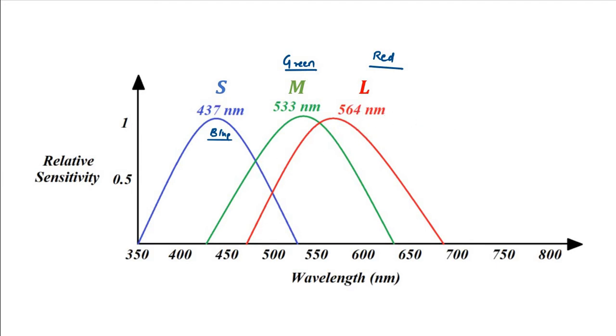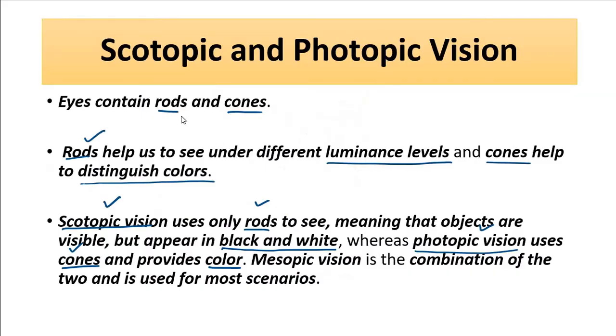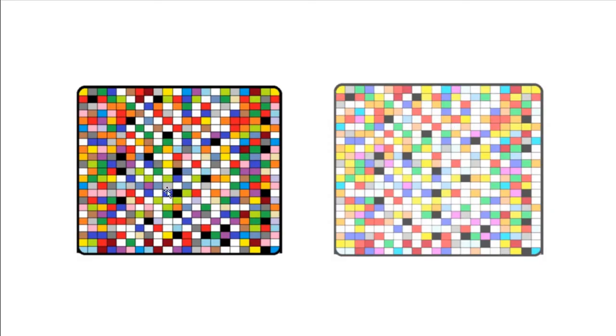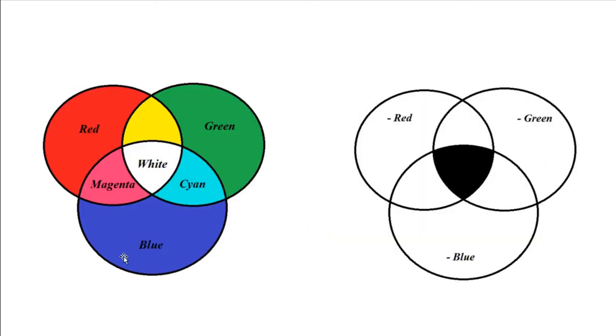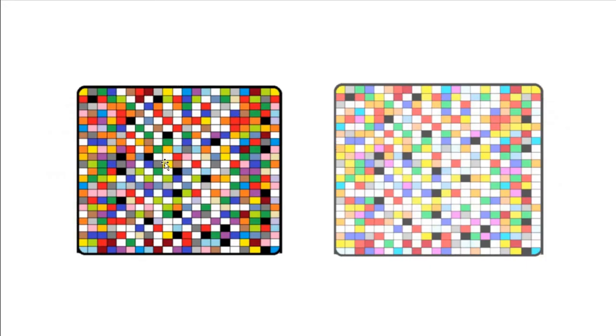This is photopic vision. Scotopic vision is only achieved by rods, which gives us only a black and white sensation of colors — different luminance levels, only black and white at the two extremes and different shades in between. Cone cells give us a sensation of colors — the three primary colors red, green, and blue — and with different combinations and wavelengths in between, all the other secondary colors are created.